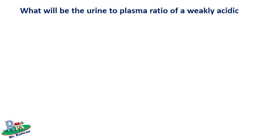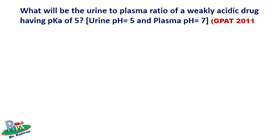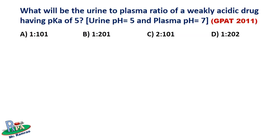This question was asked in the GPAT 2011: what will be the urine-to-plasma ratio of a weakly acidic drug having pKa of 5, where urine pH is equal to 5 and plasma pH is equal to 7? Once you read this question, if you don't know anything it's difficult to answer, but don't worry — it's very simple. You just have to remember the formula and the rest is just like walking in the garden.